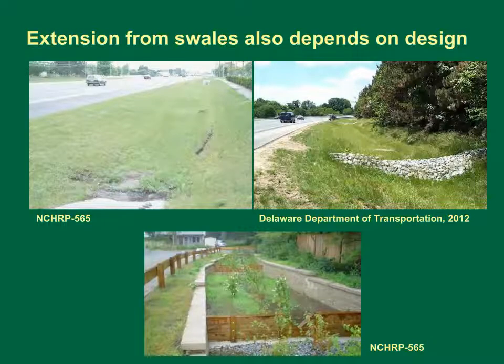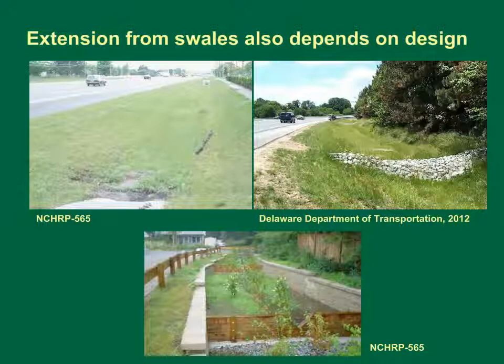Hydrograph extension by swales depends on the swale design. The length, slope, cross-section, and roughness control the overland flow. Weir flow affects the timing if there are check dams. Flow through riprap dams follows Darcy's law for groundwater flow. In each case, dewatering may occur as temporary bank storage seeps back out into the flow path as the water level recedes.